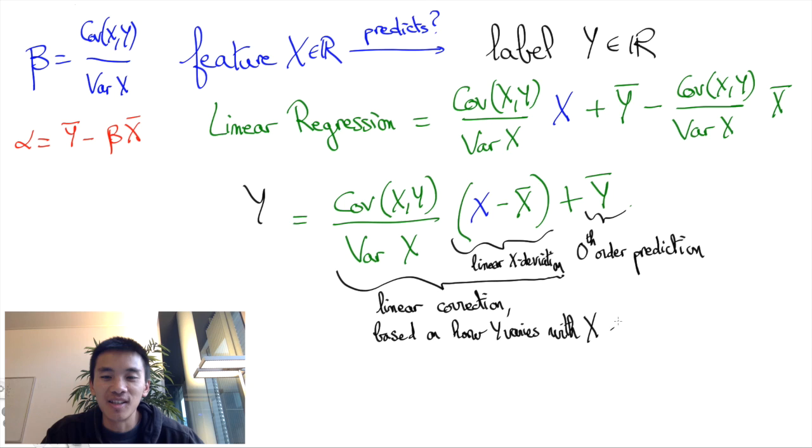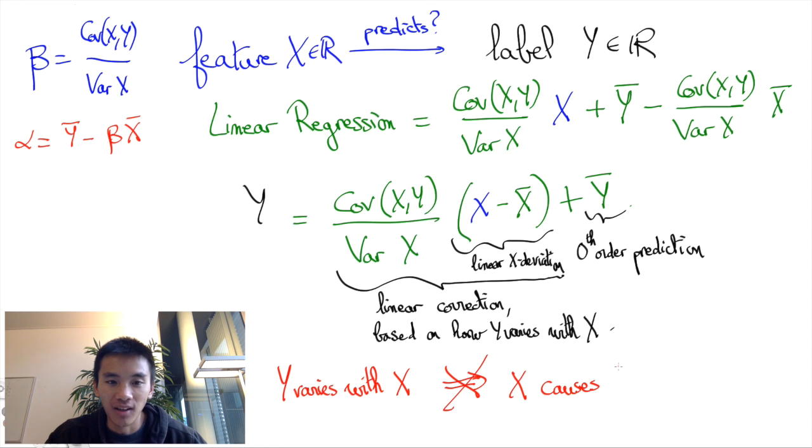I hope this is at least intuitively clear. Finally, there's something I cannot stress enough, namely: just because Y varies with X does not mean that Y causes X in any way. Just because there's a correlation does not mean that there's a causation. Back to our chocolate example, experimental data do show that Nobel prizes vary with chocolate consumption, but this does not mean that chocolate consumption causes Nobel prizes. In fact, I highly invite you to come up with a much more sensible explanation for this correlation.